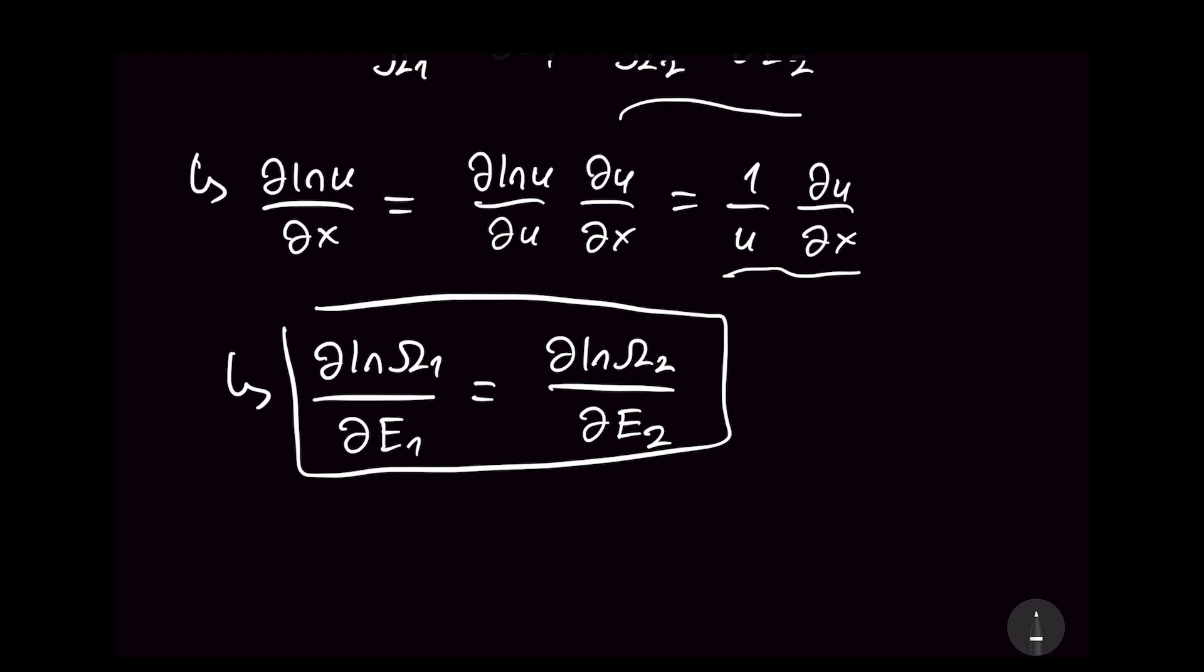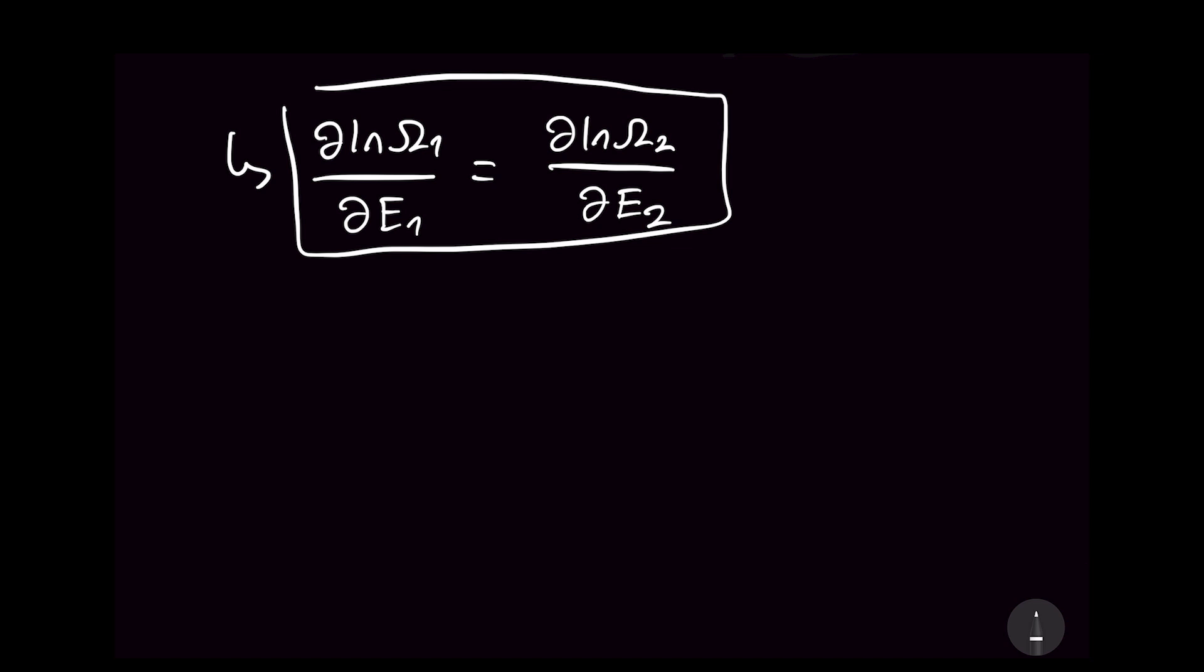So again, just to visualize what this tells us, if I were to redraw two systems here, E1 and E2, these two are interacting. So let's say we have 90% of the energy here and 10% of the energy on the right side. So after interacting, it's okay to get 90% here and 10% here. It's not that this is impossible. It's just very unlikely because there are so few microstates that can give rise to this happening.